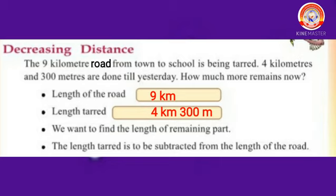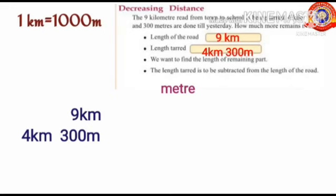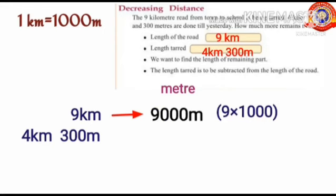To find the remaining length, the length tarred is to be subtracted from the total length of the road — that is, four kilometers and 300 meters is to be subtracted from nine kilometers. First, convert all into meters. We know that one kilometer equals one thousand meters, so nine kilometers equals nine thousand meters.